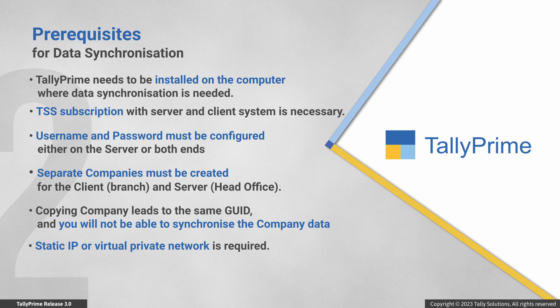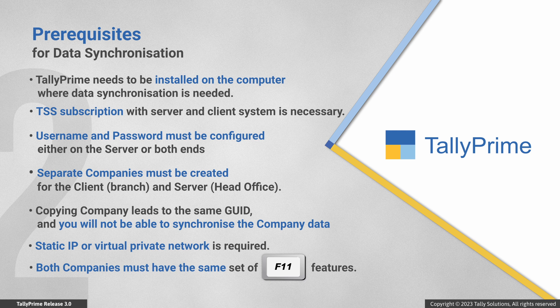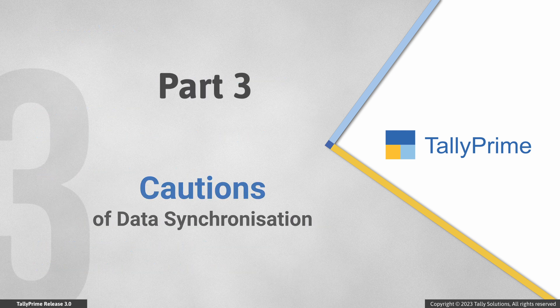Data can only be synchronized if companies at both ends have different codes. If you want to synchronize company data using static IP synchronization, then you need a static IP in your computer. Alternatively, if you have a virtual private network, you can synchronize data using static IP. It is also important to ensure that the same set of F11 features are enabled in the server and client company.